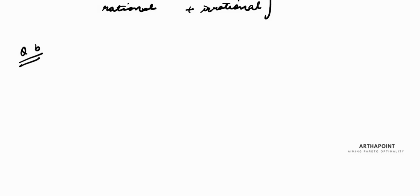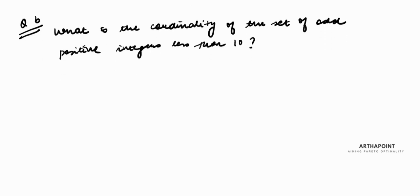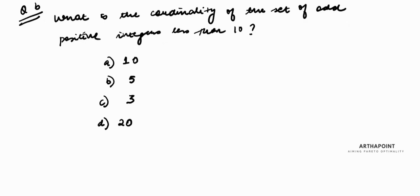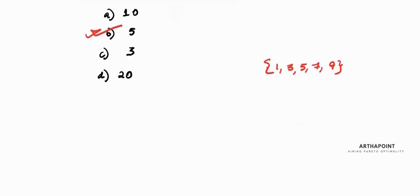The next question asks: what is the cardinality of the set of odd positive integers less than 10? The options are 10, 5, 3, and 20. Cardinality simply means the number of elements in a set. The odd positive integers less than 10 are 1, 3, 5, 7, 9 — so the cardinality is 5. The answer is 5.